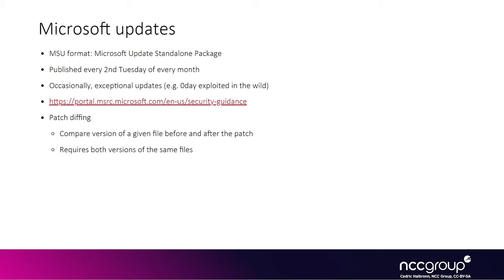Starting with recent Windows 10 versions, instead of having all executable files like DLLs and EXEs in actual PE format in the Patch Tuesday updates, Microsoft uses a special compressed format that includes only the differences from the first version in the ISO. This reduces the size of Patch Tuesday updates overall, but makes it more complicated to reconstruct the pre-patch and post-patch versions of the files needed for binary diffing.